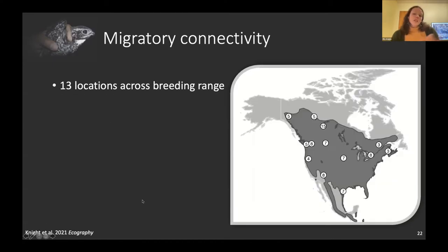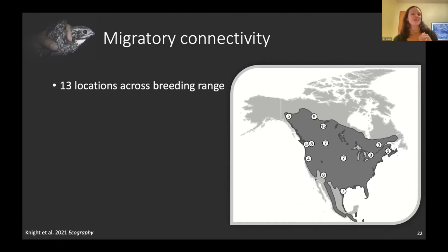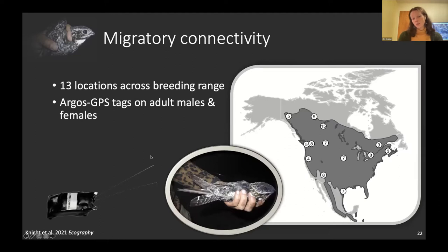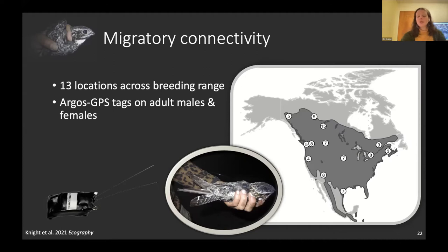For species with varying population trends like the common nighthawk — some declining, some increasing — we look for times in the annual cycle with increased migratory connectivity to think about what could cause those differences. Migratory connectivity has been called a useful first step in evaluating causes of differential population trends among locations. So GPS tags were put on common nighthawks at 13 locations across their breeding range.